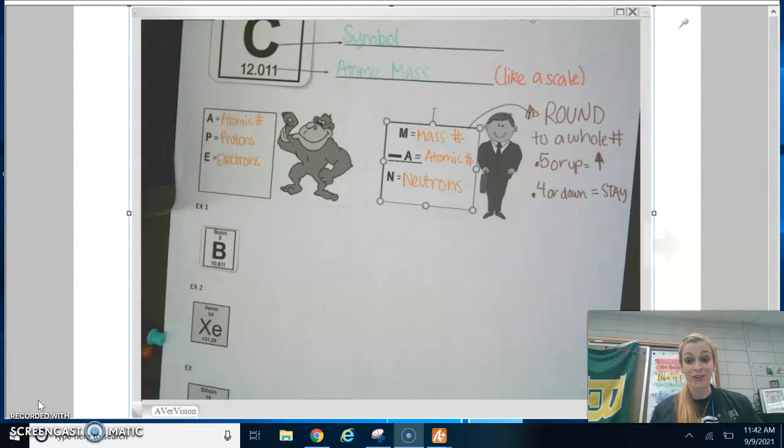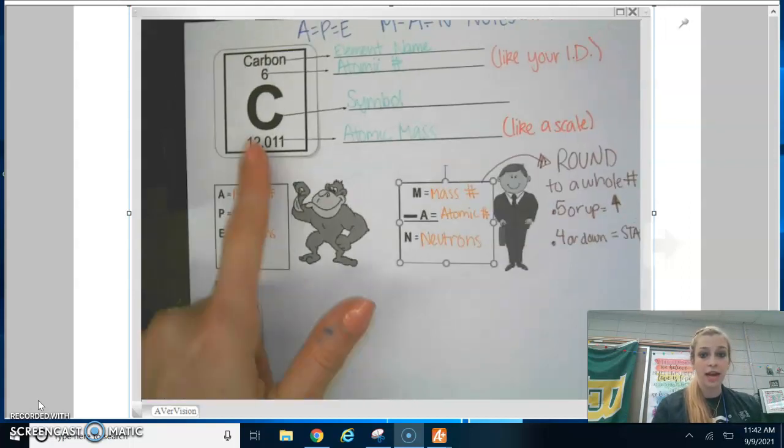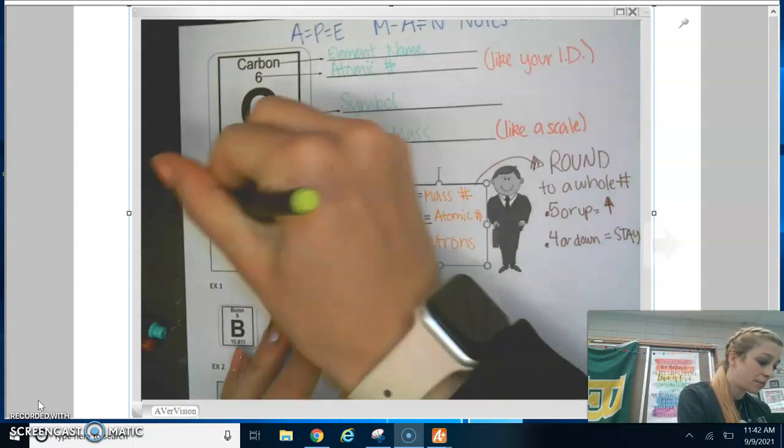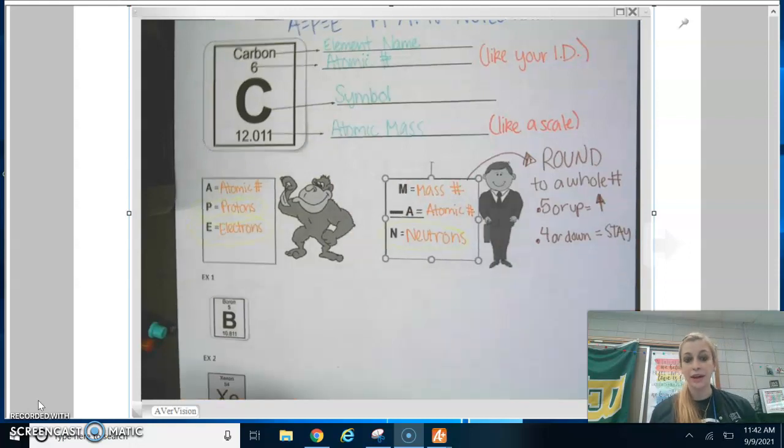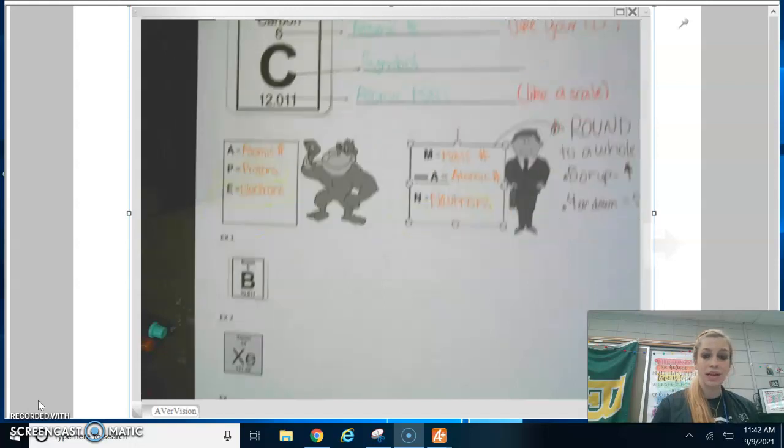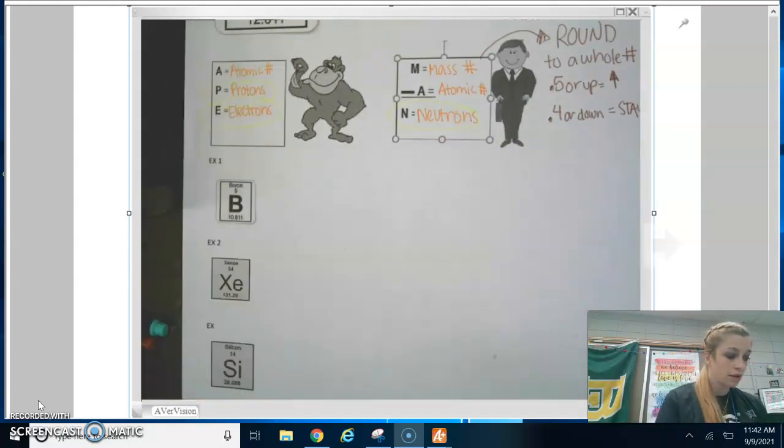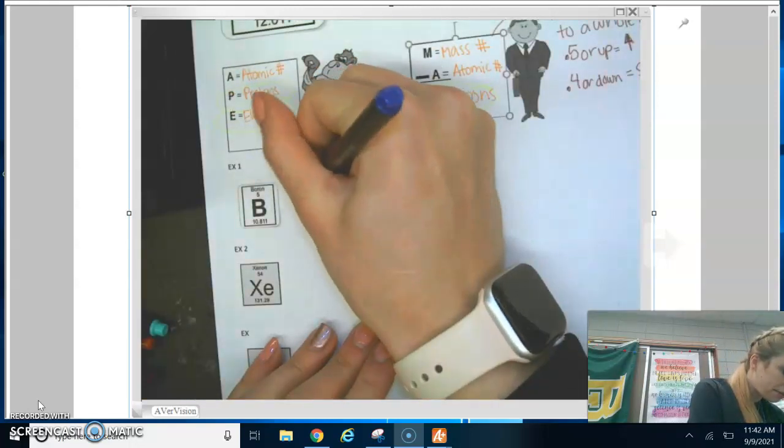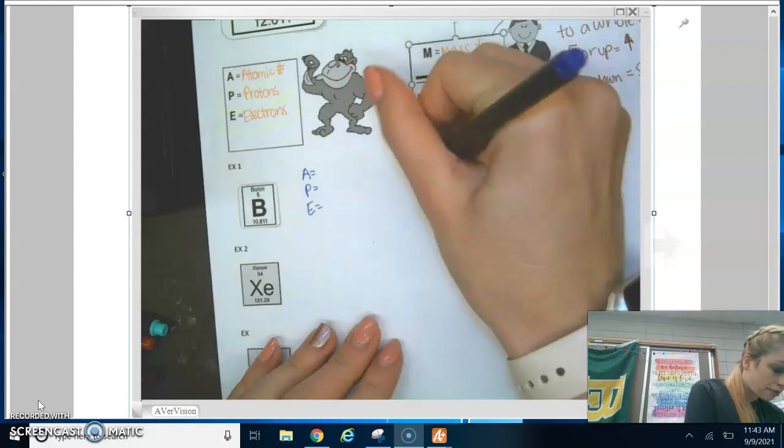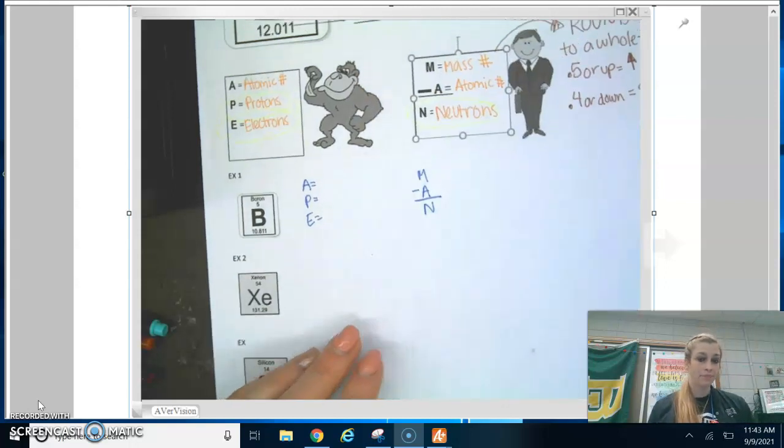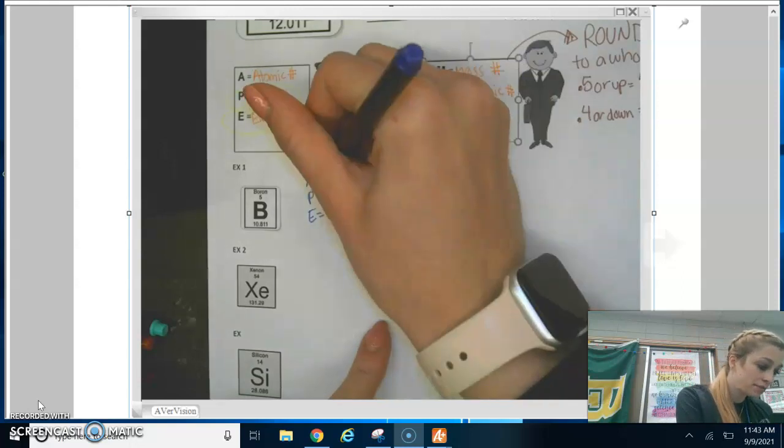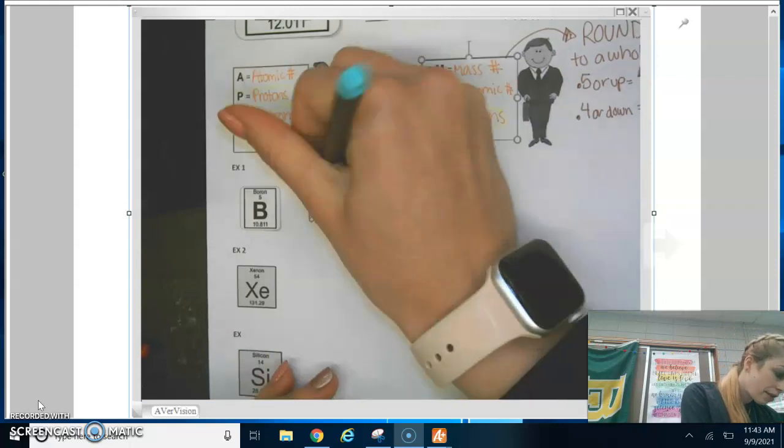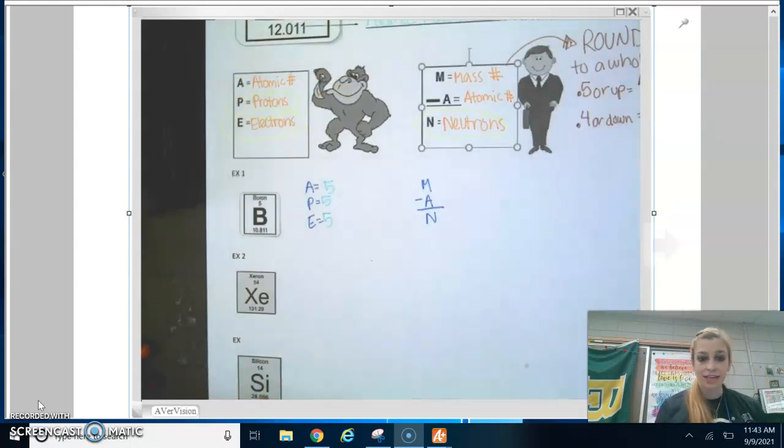First thing I'm going to do each time is I'm going to set my problem up. I'm going to write ape and man. So the atomic number of boron is five. It's the number on top. So that means we have five protons and five electrons. Nice and easy. The mass number of boron is 10.8. Since that is 0.8, that's 0.5 or up. So we round up. So we change that to 11 minus atomic number is 5, equals 6 neutrons. And then I want you to circle what you got. You got five protons, five electrons, and six neutrons.